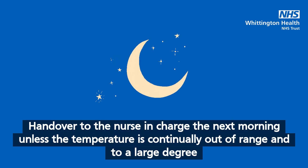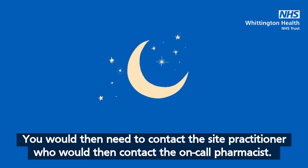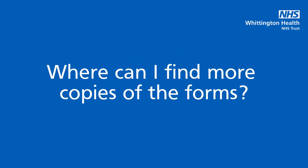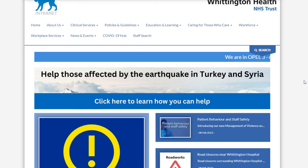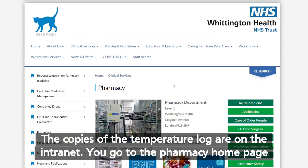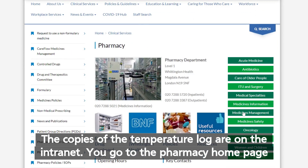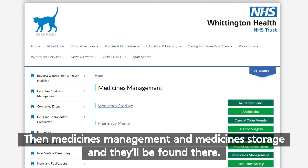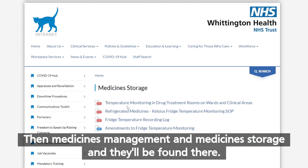If the area is closed, record this on the log form and hand it over to the nurse in charge the next morning. If the temperature is continually out of range to a large degree, you would need to contact the site practitioner, who will then contact the on-call pharmacist. Copies of the temperature log are on the intranet — go to the pharmacy home page, then medicines management, then medicine storage.